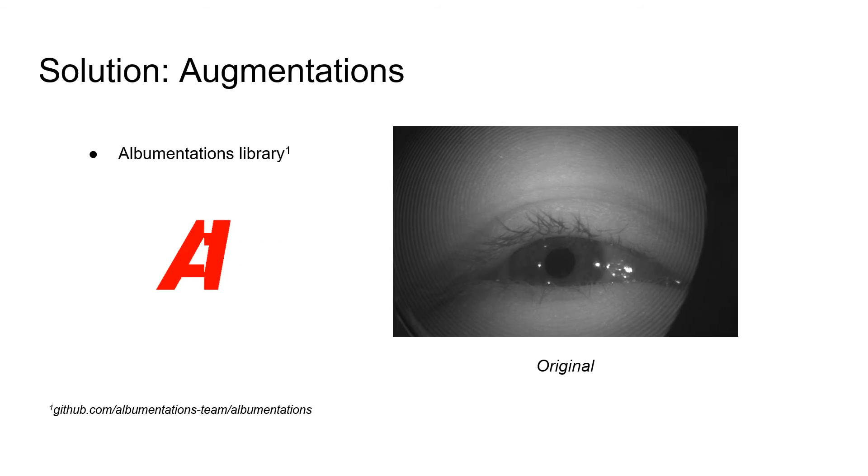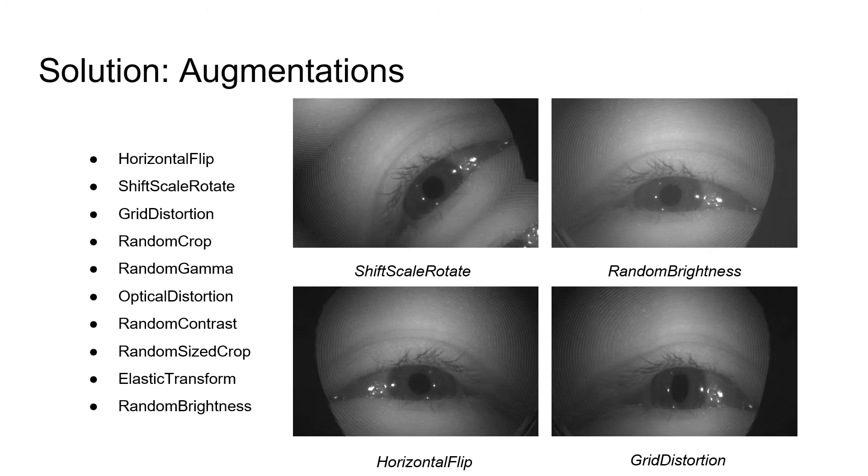As stated before, the labeled images are only 5.5% of the total, so the augmentation is crucial. We used the augmentations library to enrich our dataset. Since the sequences were captured from the static VR headset, we decided not to use aggressive augmentations. The heaviest one was the grid distortion, which narrows or widens the eye and creates a new set of unique images.